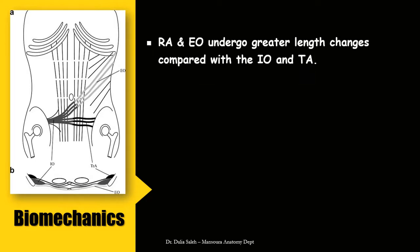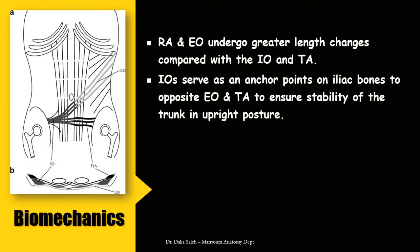Regarding the biomechanics of the anterior abdominal wall muscles, the rectus abdominis and the external oblique undergo greater length changes compared with the internal oblique and the transversus abdominis, which can be explained by the length of their muscle fibers. The internal oblique muscles on each side serve as anchor points, and the transversus abdominis on the iliac bones opposes the external oblique and transversus abdominis of the opposite side to ensure stability of the trunk and upright posture.